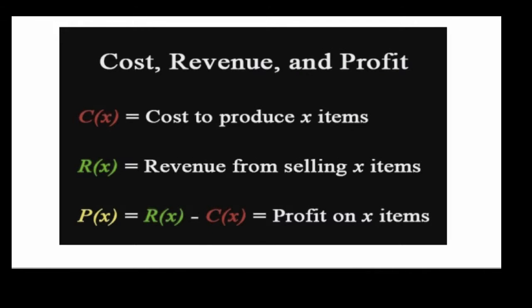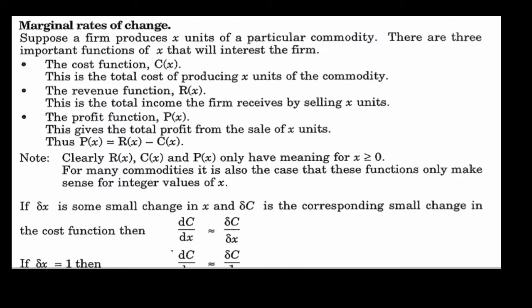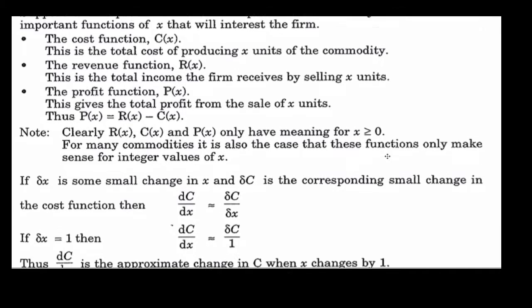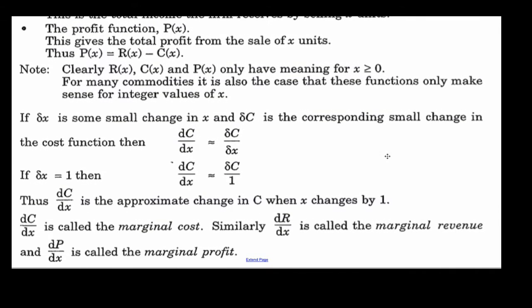First, some basic definitions from economics: cost, revenue, and profit. Cost is the cost to produce X items, revenue is from selling X items, and profit is the difference between your revenue and your cost. We want to know what the marginal cost, marginal revenue, and marginal profit are.